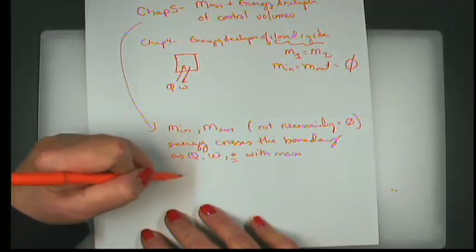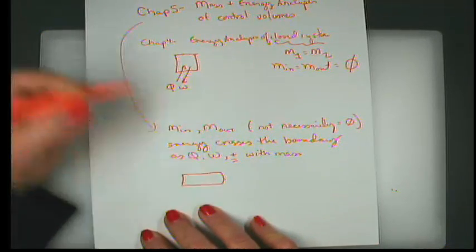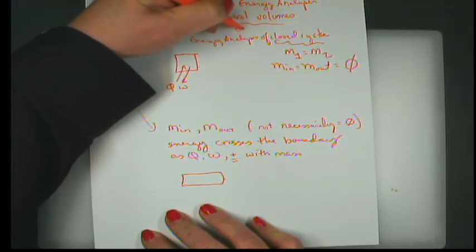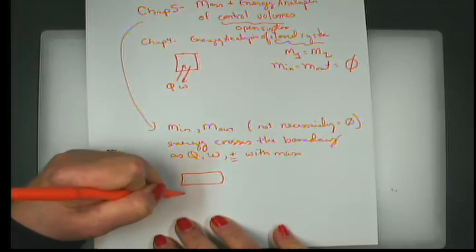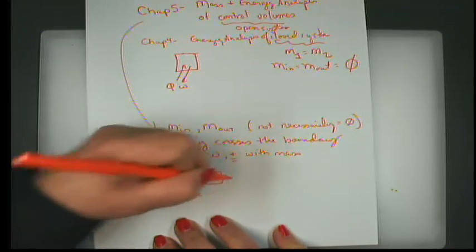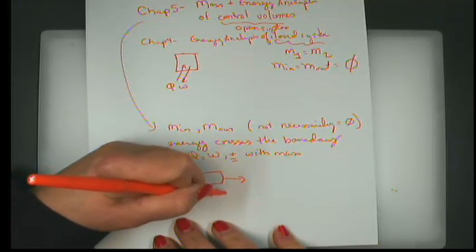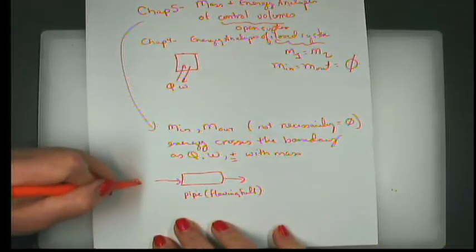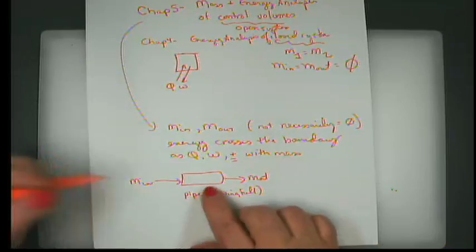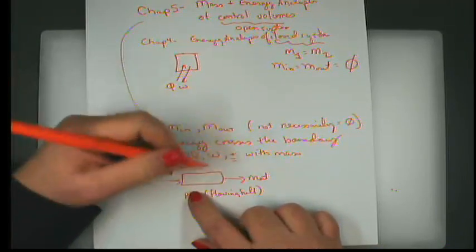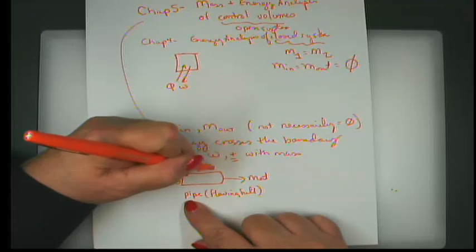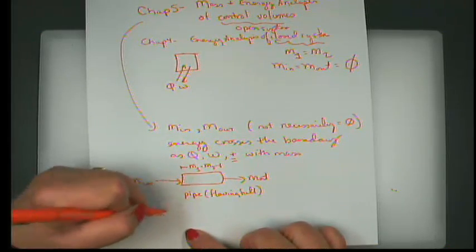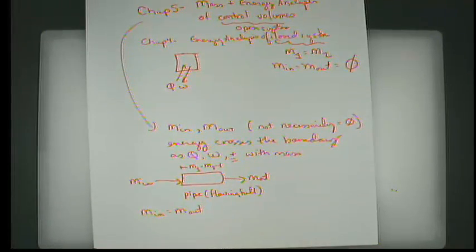Some examples of an open system — which is another name for control volume — include a pipe through which fluid flows. If the pipe is flowing full, you'll have some mass that goes in and some mass that goes out. In all likelihood, if this is an incompressible fluid, mass is not accumulating; the mass at time 1 equals the mass at time 2, so the mass going in must equal the mass going out. The energy associated with the mass going in and the mass going out may be different, however.